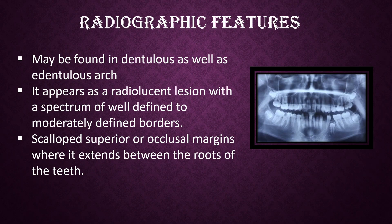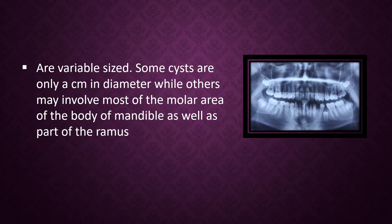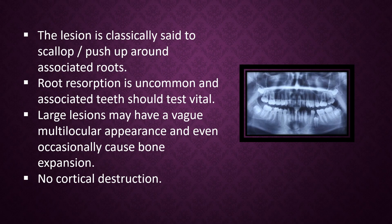Radiographic features: It may be found in dentulous as well as edentulous arcs. It appears as a radiolucent lesion with a spectrum of well-defined to moderately defined borders, with scalloped superior or occlusal margins where it extends between the roots of the teeth. These are variable in size — some cysts are only a centimeter in diameter while others may involve most of the molar area of the body of the mandible and the lower part of the ramus. The lesion classically scallops or pushes up around the associated roots.